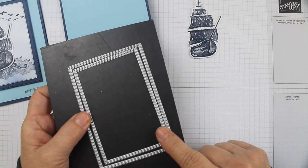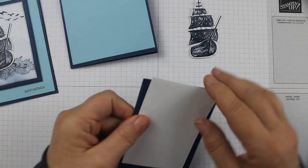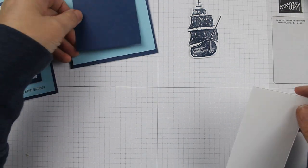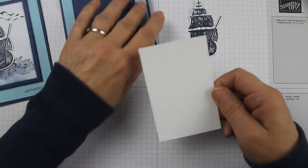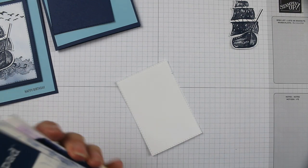Then I'm going to get my Night of Navy ink pad. I'm going to open that up. I'll put my ship off to the side here. I got a blender pen and I'm going to ink it up.